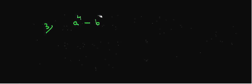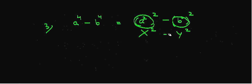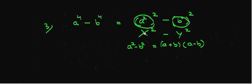Third example: suppose we have to factorize a⁴ - b⁴. Now, a⁴ - b⁴ in terms of squares can be written as (a²)² - (b²)². If we treat a² as x and b² as y, this expression is the difference of squares x² - y². We know that a² - b² = (a + b)(a - b).